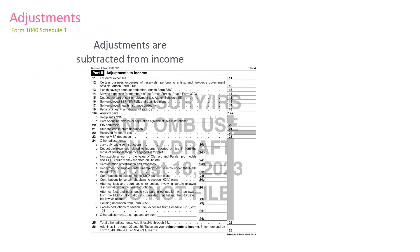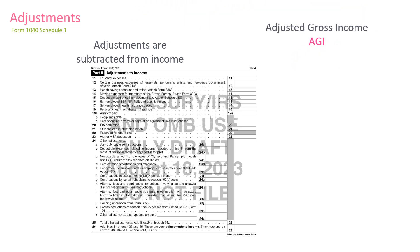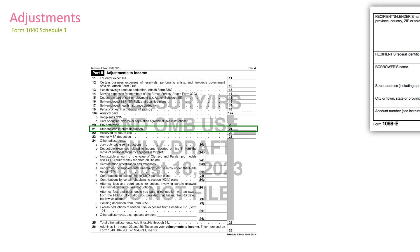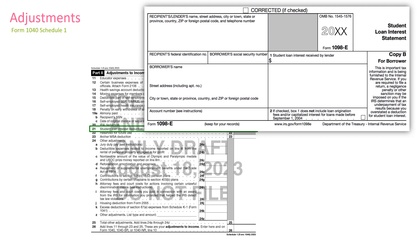Adjustments are contained on Schedule 1, and they reduce the taxpayer's total income. Once you total all the income and subtract all the adjustments, you get the adjusted gross income or AGI. One of the most common adjustments you may see at our sites is the student loan interest deduction. Clients will typically bring in a 1098 or a letter from the lender showing the amount the taxpayer paid in interest.